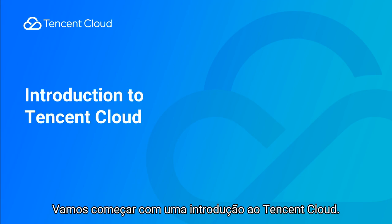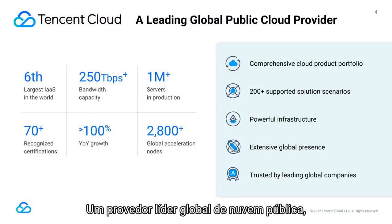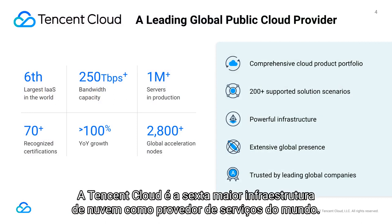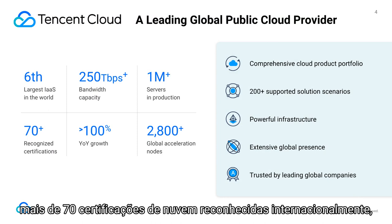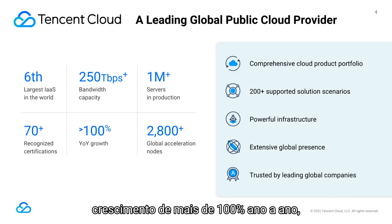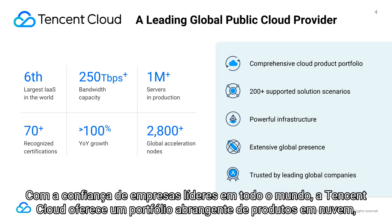Let's start with an introduction to Tencent Cloud. A leading global public cloud provider, Tencent Cloud is the sixth largest cloud infrastructure as a service provider in the world. Tencent Cloud supports over 250 terabits per second of bandwidth and has over 1 million servers in production, over 70 internationally recognized cloud certifications, more than 100% year-on-year growth, and more than 2,800 global acceleration nodes.